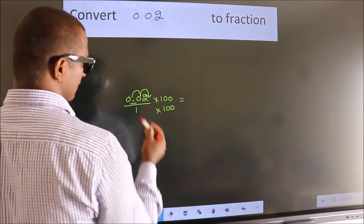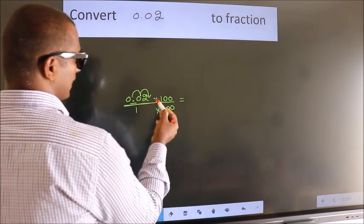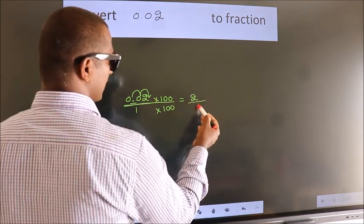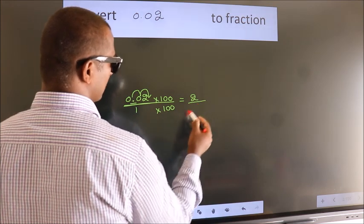Next, 0.02 into 100, we get 2. In the denominator, 1 into 100 equals 100.